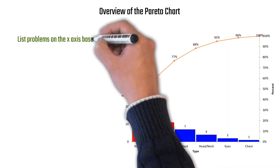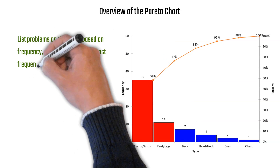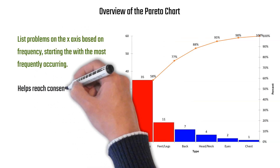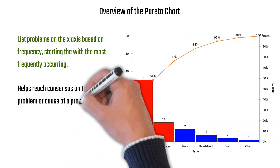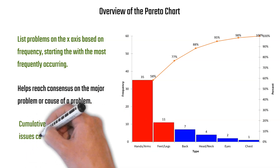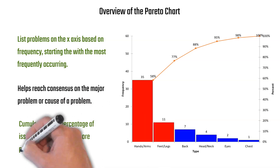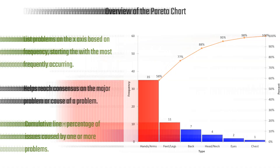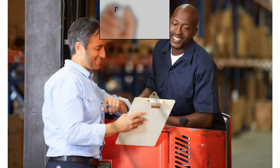Here's one done on injuries in a plant. The top two injuries are hands and arms, and feet and legs, listed in descending order on the x-axis with frequency on the y-axis. This helps reach consensus on the major problem — hands and arms is the number one reason, accounting for 58% of the injuries.